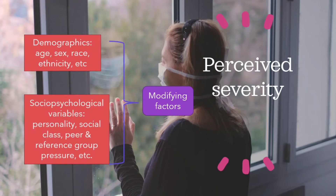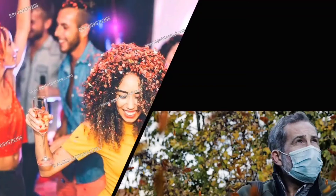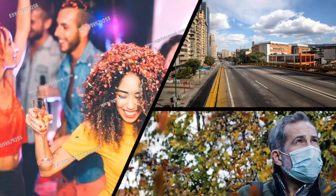The modifying factors include demographics like age, sex, race, ethnicity, etc., and socio-psychological variables like personality, social class, peer and reference group pressure, etc. For example, in the beginning, the younger aged were more carefree regarding the disease — they were doing parties and going out in crowds. The middle aged with a family were more afraid. Again, some of the aged people were so scared of COVID they stopped going out, while some were carefree like the younger ones. This was just an example — obviously there were exceptions. The perceptions also differed according to sex, race, and ethnicity.